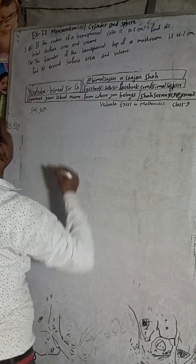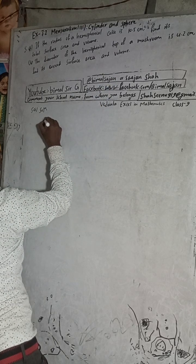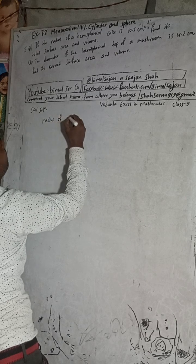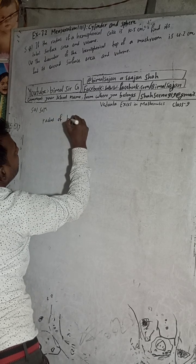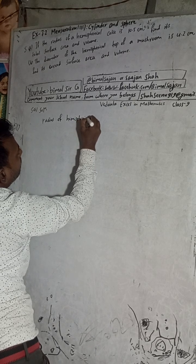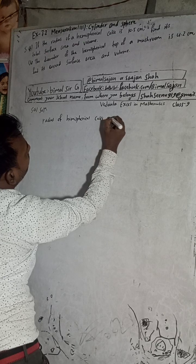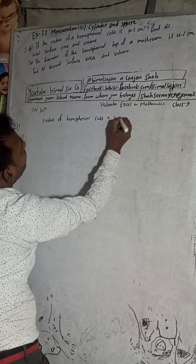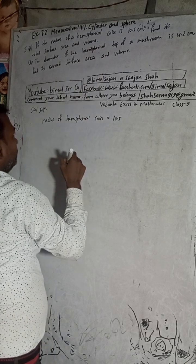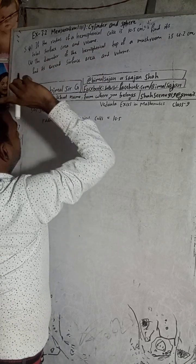Dear students, if the radius of a hemispherical cake is given as 10.5 cm, find its total surface area and volume.